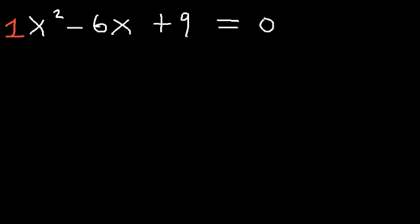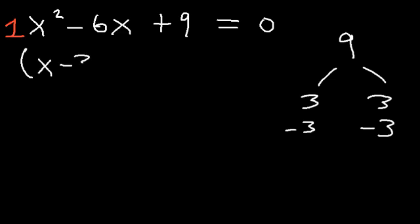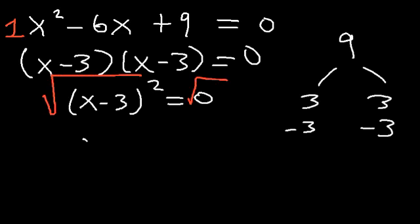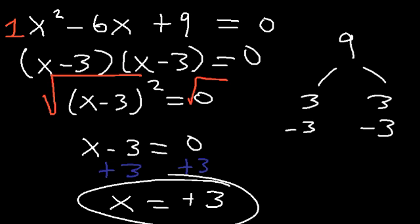Another way to get the same answer is to factor the expression. What two numbers multiply to 9 but add to negative 6? Negative 3 times negative 3 is positive 9, and negative 3 plus negative 3 equals negative 6. So the factored form is x minus 3 times x minus 3, or x minus 3 squared equals 0. Taking the square root of both sides gives x minus 3 equals 0, so x equals 3. Anytime the discriminant is equal to 0, you will always get one real solution.